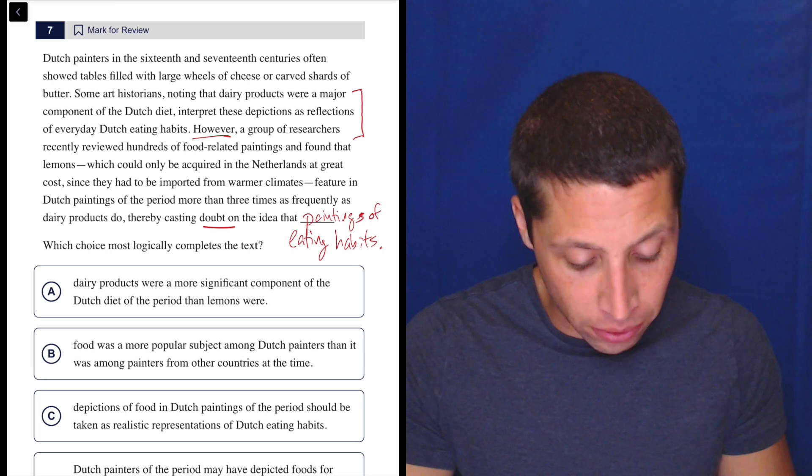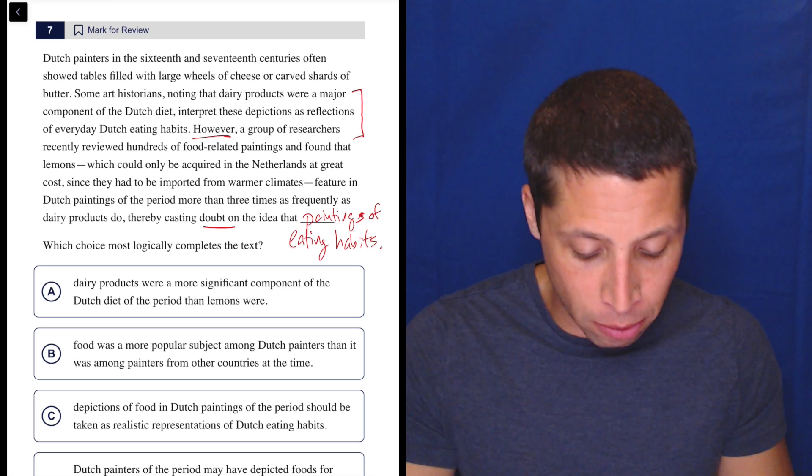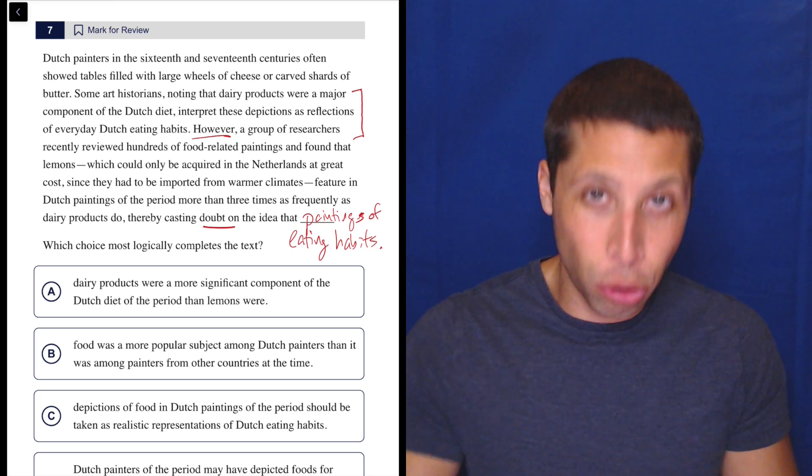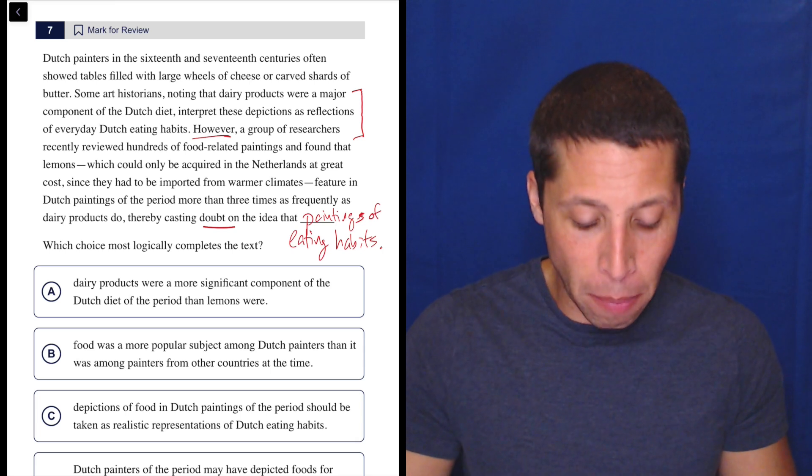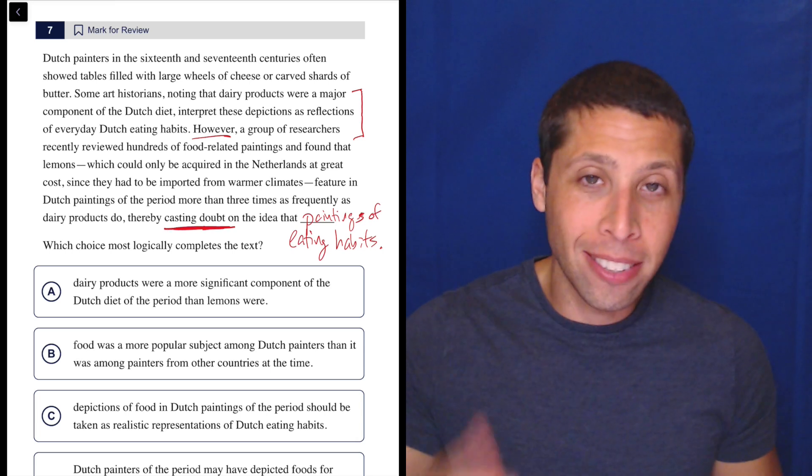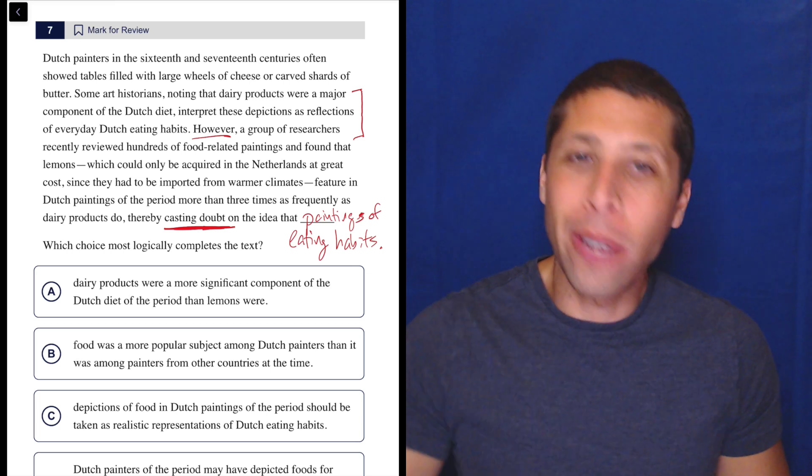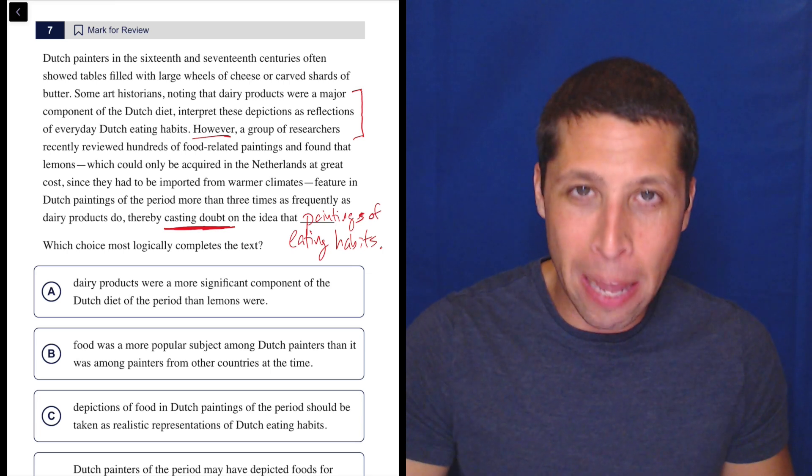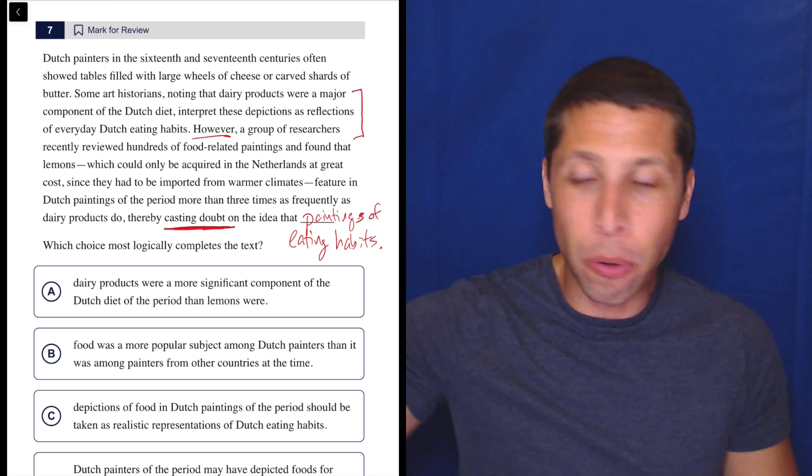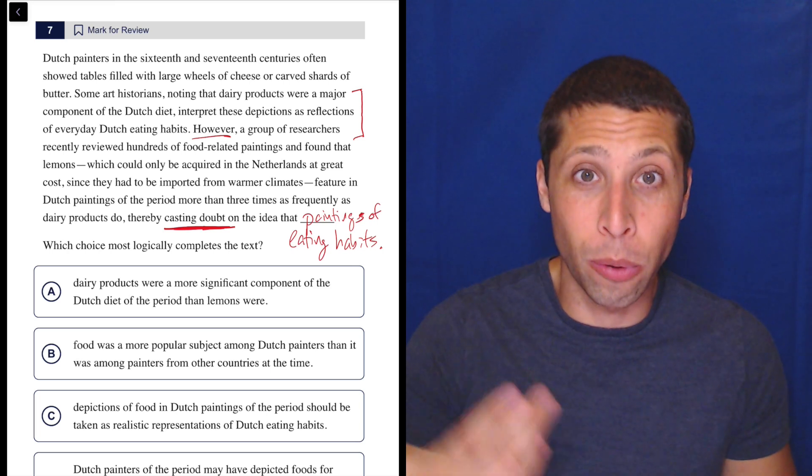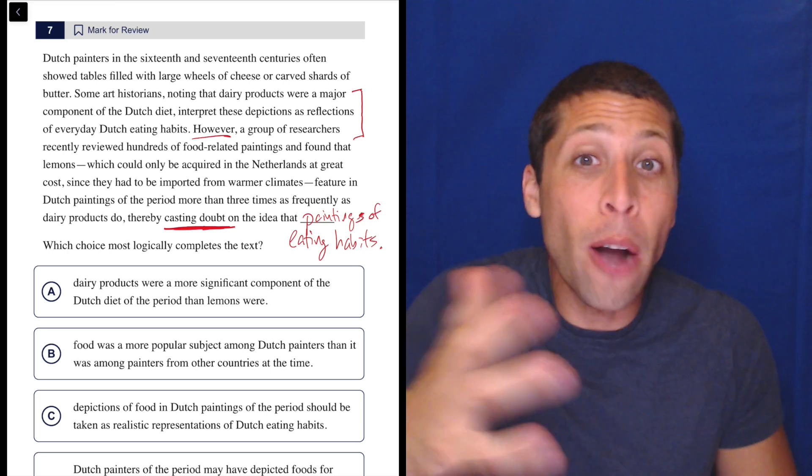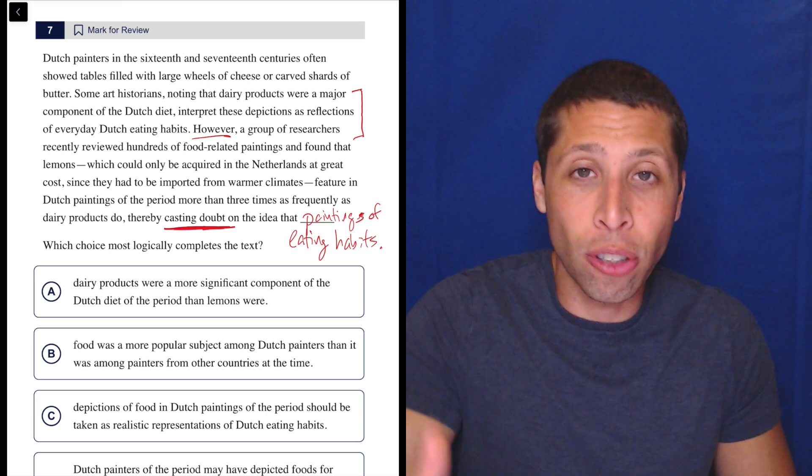So A, dairy products were a more significant component of the Dutch diet of the period than lemons were. Well, that is true, right? I know what they're trying to do here. That is a hundred percent what they said. But remember what's right before the blank - casting doubt. We're not doubting that they ate more dairy than lemons. They said that they ate very few lemons because they're rare. They have to be imported. So they didn't eat a lot. So we're not doubting that. They say that that's true.